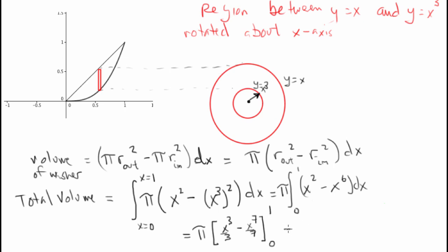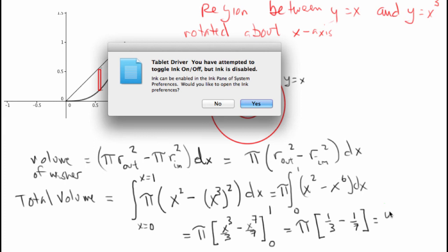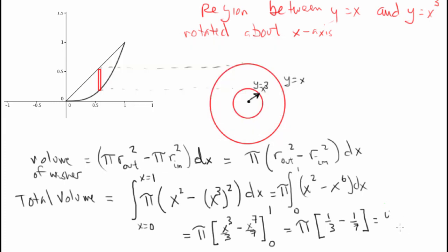That simplifies to pi times, so 1 cubed over 3 is 1 third minus 1 to the seventh which is again just 1, so 1 seventh. And so we can do a quick little calculation. That becomes 1 third minus 1 seventh is 4 twenty-firsts. So that makes this 4 pi over 21.